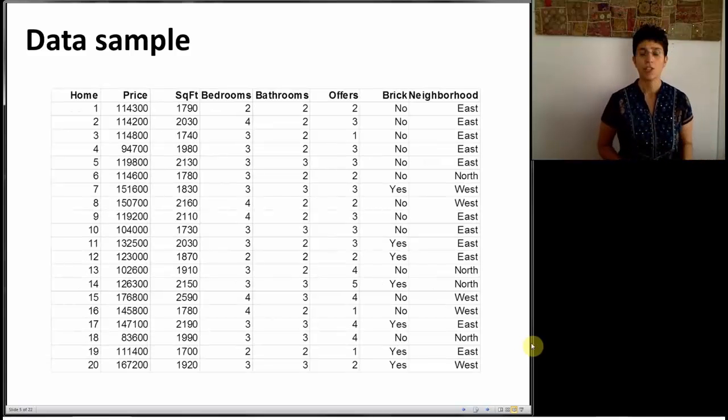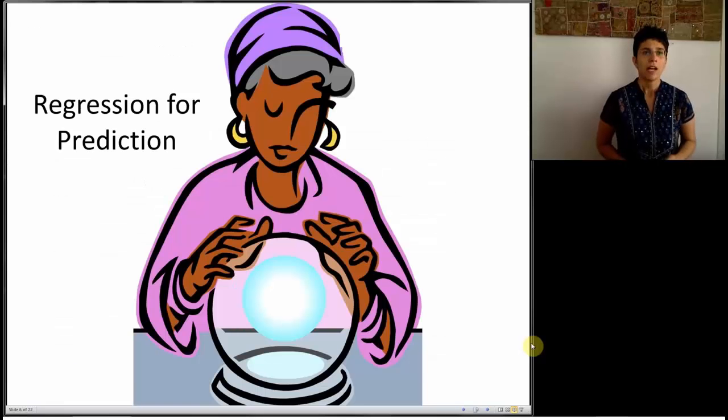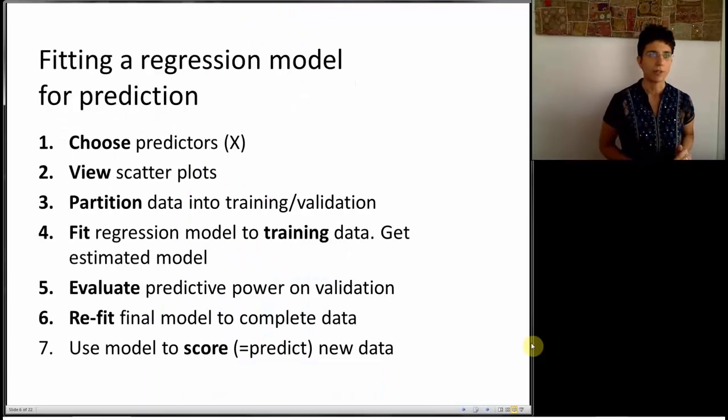Same data, we haven't changed anything yet. How are things going to be different in prediction? Recall the process we went through for description. We're going to have a slightly different process, although many components are similar. The differences will arise when we look at each component and decide how to go about it. The first step, just like we did before, is to choose your predictors. The difference is we're going to have different criteria for choosing our predictors in the predictive context.